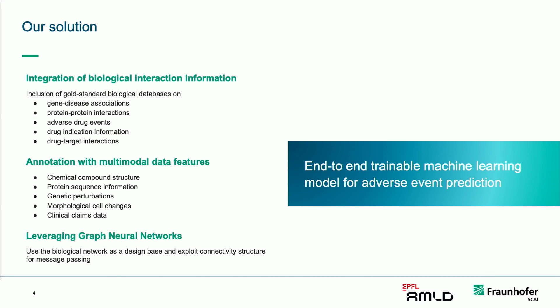We use biological interaction databases on protein-protein interactions, on drug-gene associations, and various other types that can form a heterogeneous knowledge graph. We also use multimodal features on the entities — for example, gene expression data, chemical fingerprints, and data from EHR records and clinical claims. And we use graph neural networks as a way to really make use of the data, integrate it, and use it for our prediction.